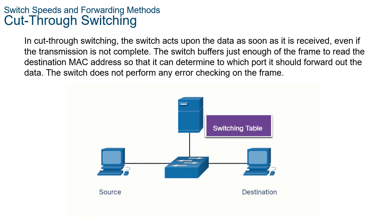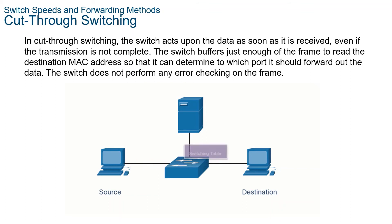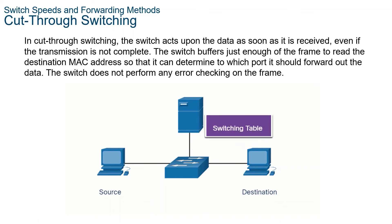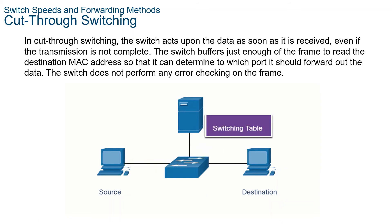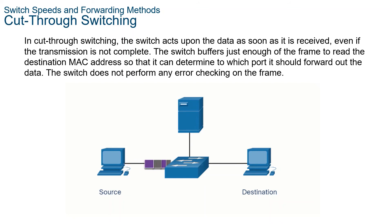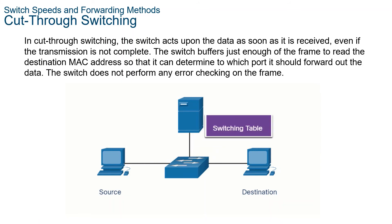In cut-through switching, the switch acts upon data as soon as it is received, even before the transmission is complete. The switch buffers just enough of the frame to read the destination MAC address — located in the first six bytes following the preamble — to determine which port to forward the data out. The switch looks up the destination MAC address in the switching table, determines the outgoing interface port, and forwards the frame to the designated switch port. The switch does not perform any error checking on the frame.